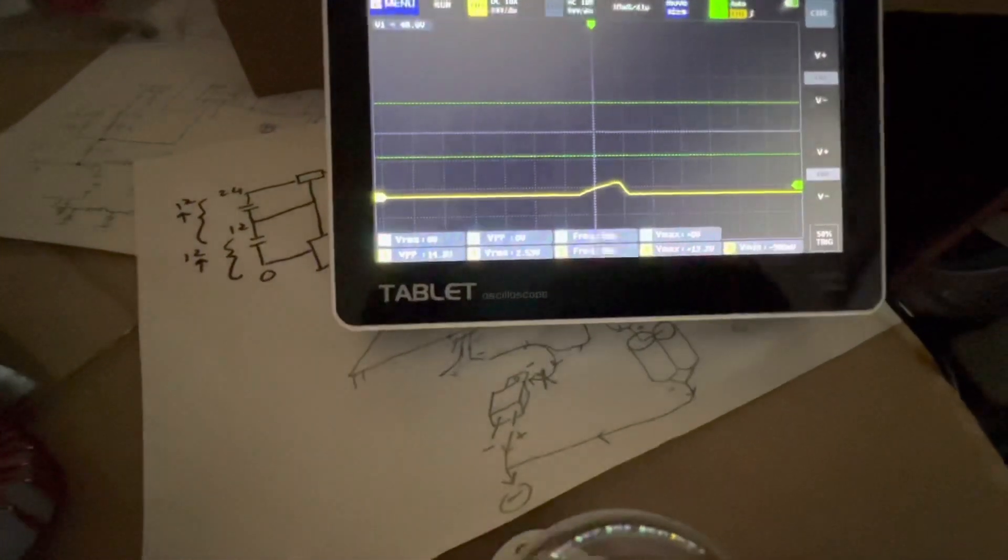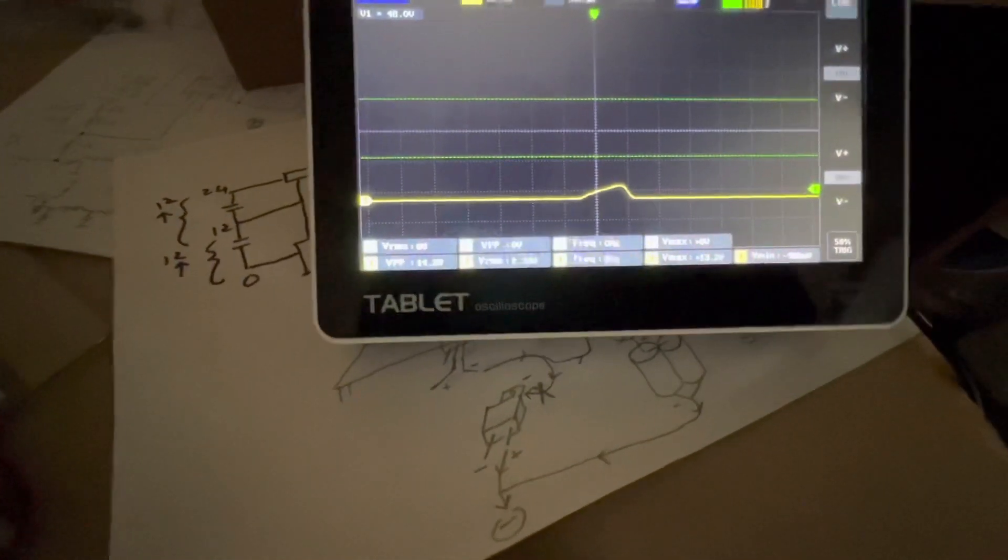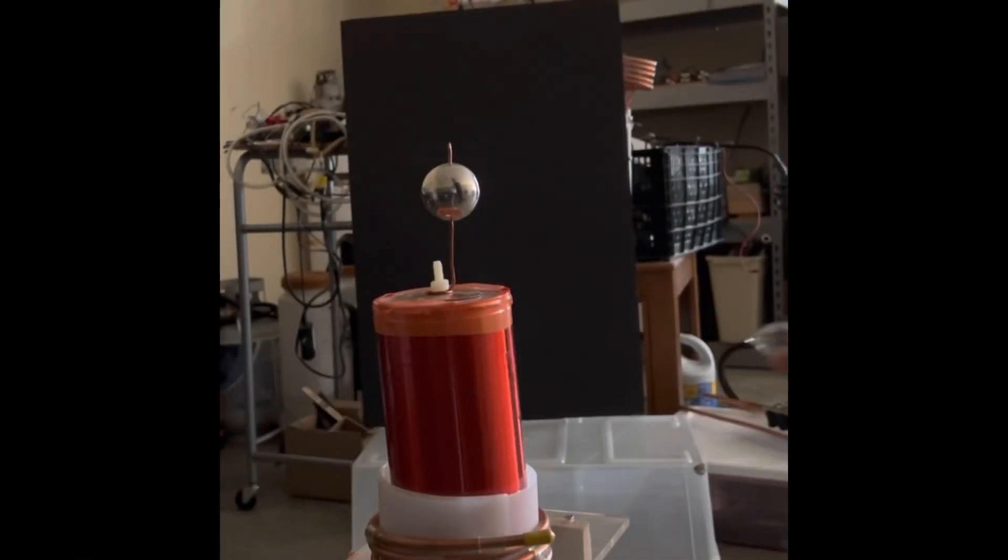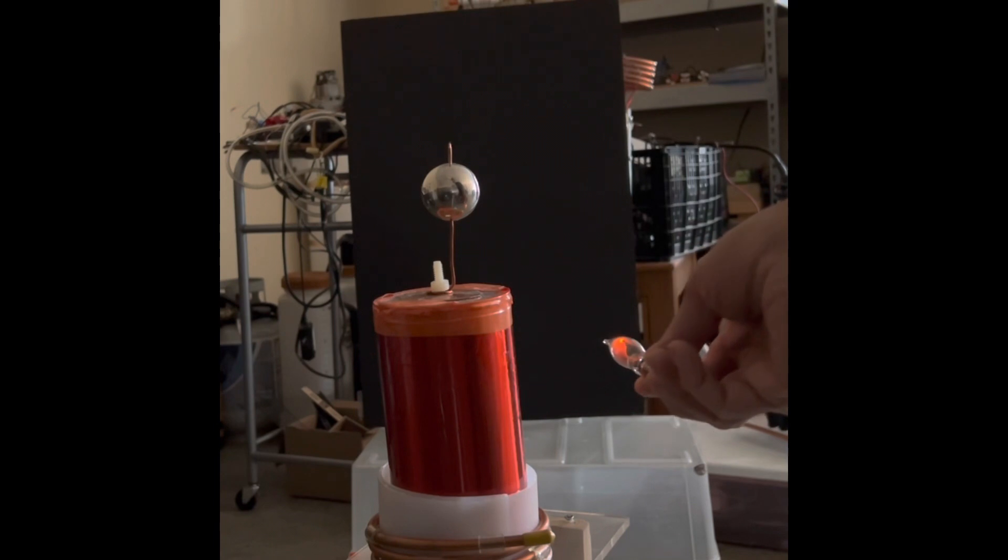Here we have the gates turned on and now we're going to discharge the ramp through that Tesla coil and see what kind of output we can get.